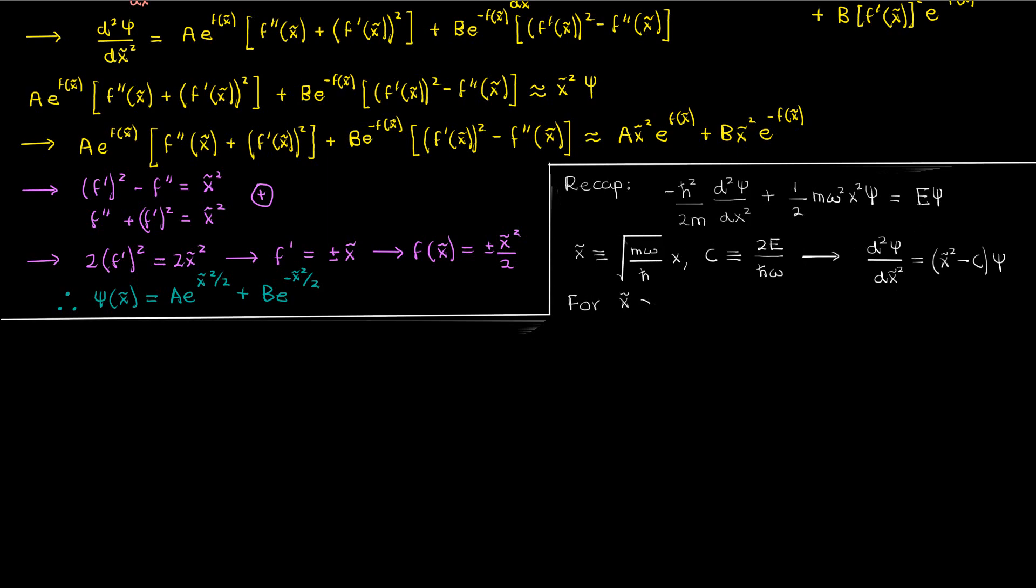Lastly we approximated this differential equation in the limits of the domain where x tilde was much larger than c, and then we solved this differential equation and came up with a solution involving the exponential of negative x squared over 2 and the exponential of x squared over 2.